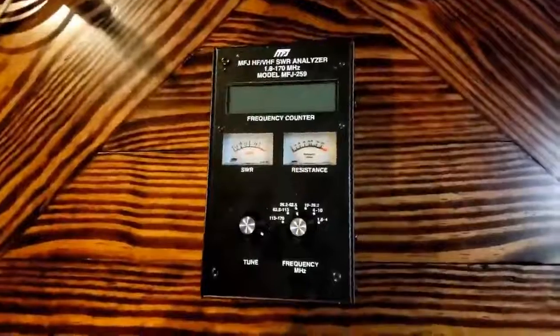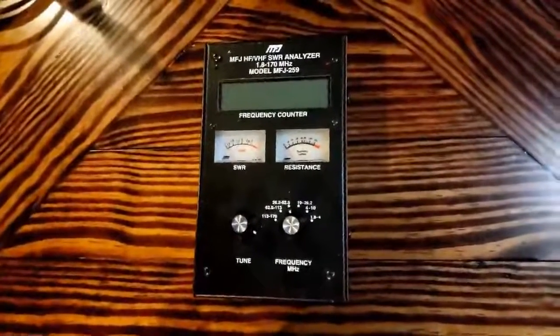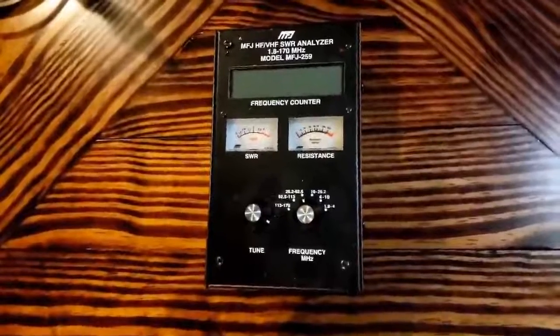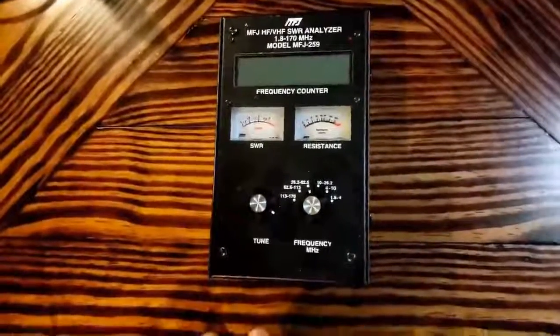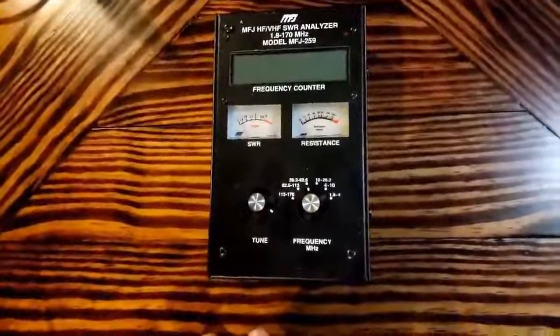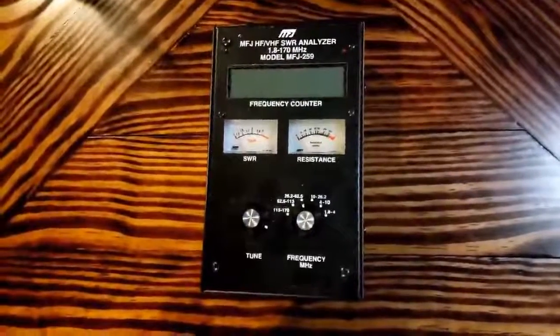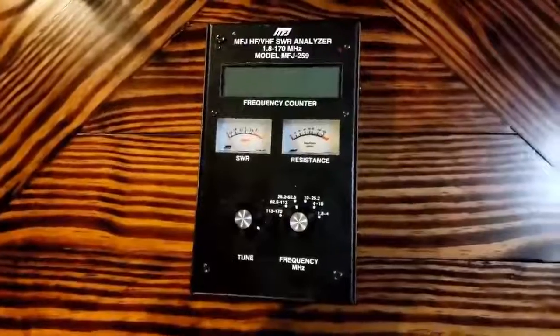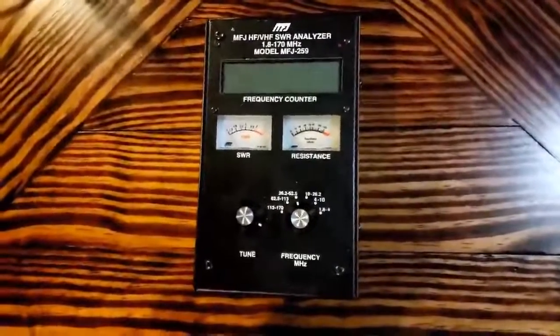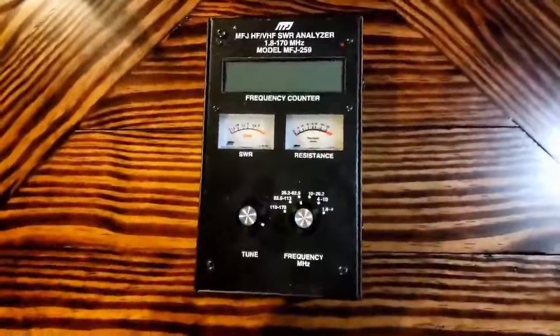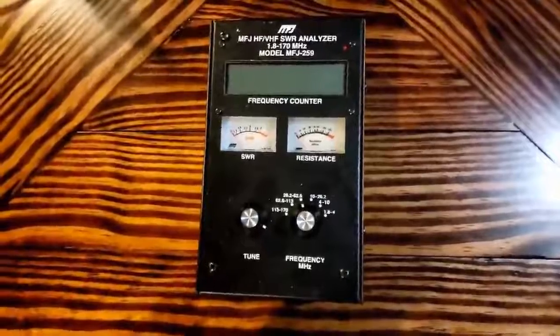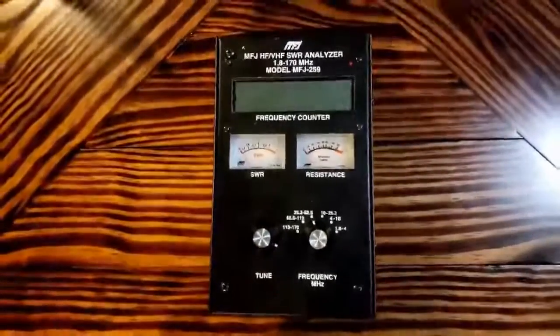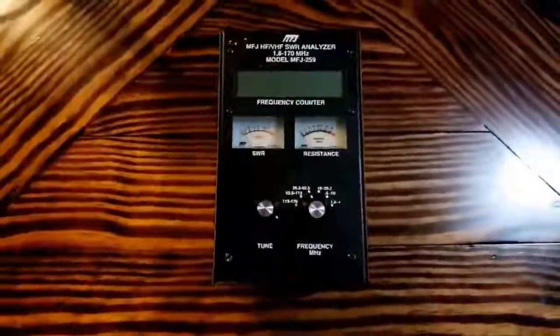I was very pleased to see 1.1 SWR and 47 ohms of resistance. That was across pretty much the entire CB band. My beam was capable of going down to 26 megahertz and keeping below 1.5 SWR, and up to 28.6 and still having 1.5 or less SWR.